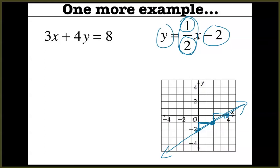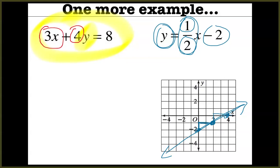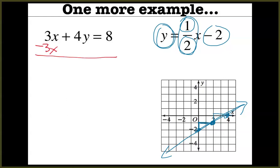The second equation was easy because y was already by itself — it was already in slope-intercept form. This first equation, on the other hand, is not in slope-intercept form; y is not by itself. So we're going to have to get rid of that 3x and that 4 to isolate y. First, we do minus 3x on both sides, so 3x minus 3x cancels, leaving 4y equals 8 minus 3x.